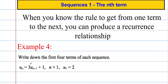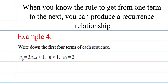We also have these things called recurrence relations. When we know the rule to get from one term to the next, we can produce what's called a recurrence relationship. What this is saying is that to get a term in the sequence, we do three times the term before and then add one. And it tells me the first term is two. With a recurrence relationship you must have a rule, but you must also be given the first term — it's vital that you're given that first term.